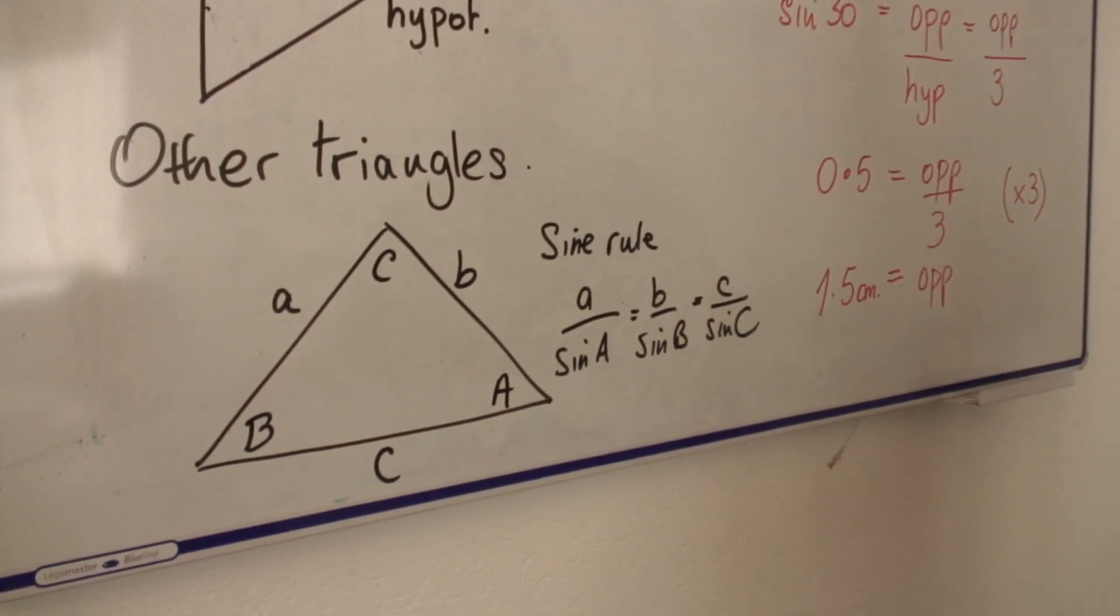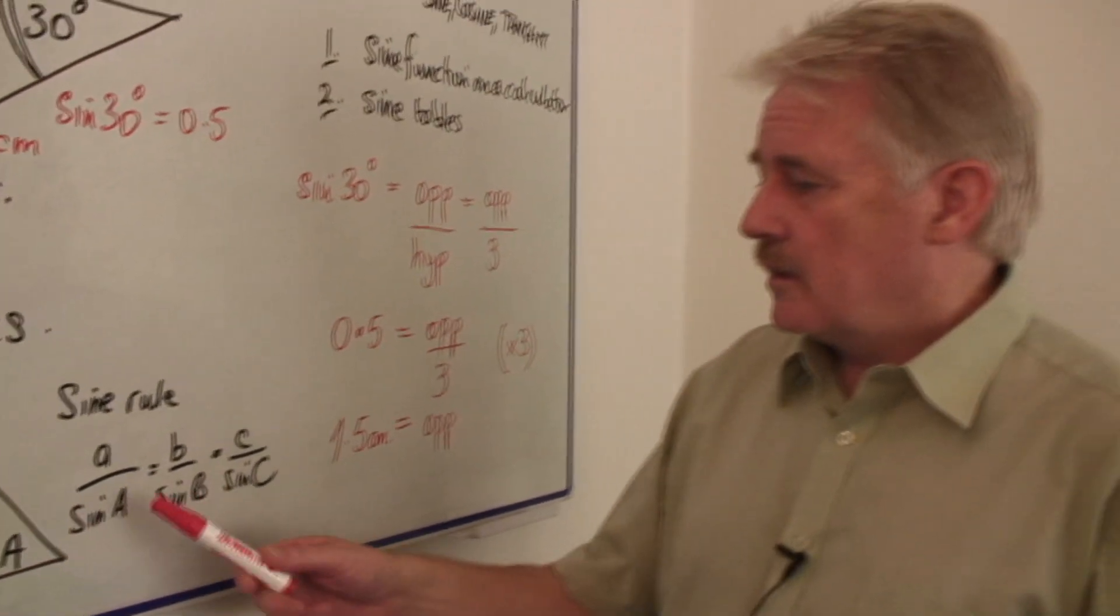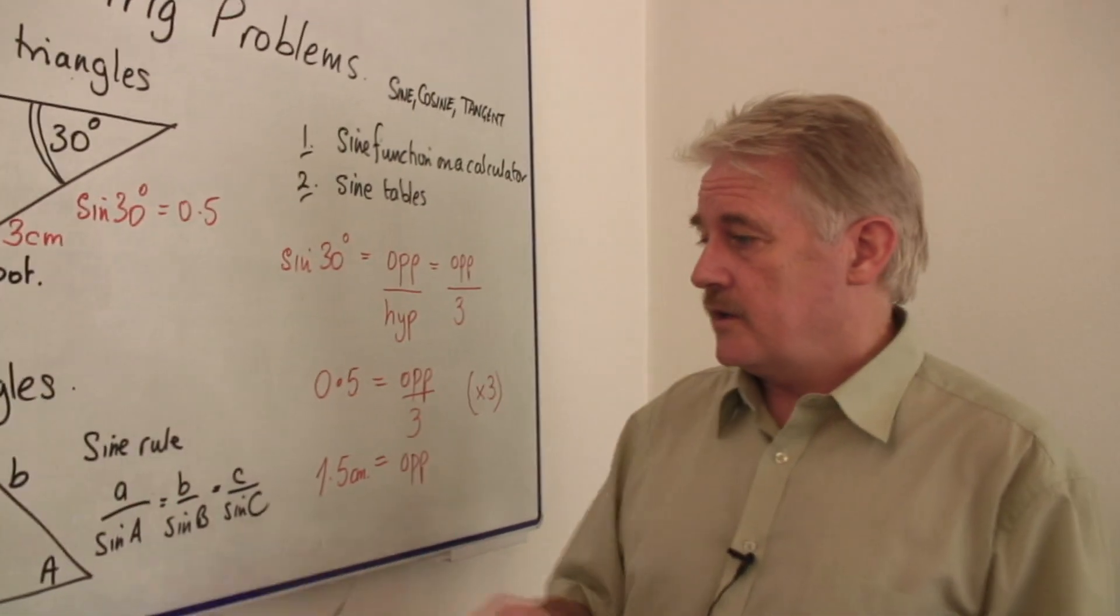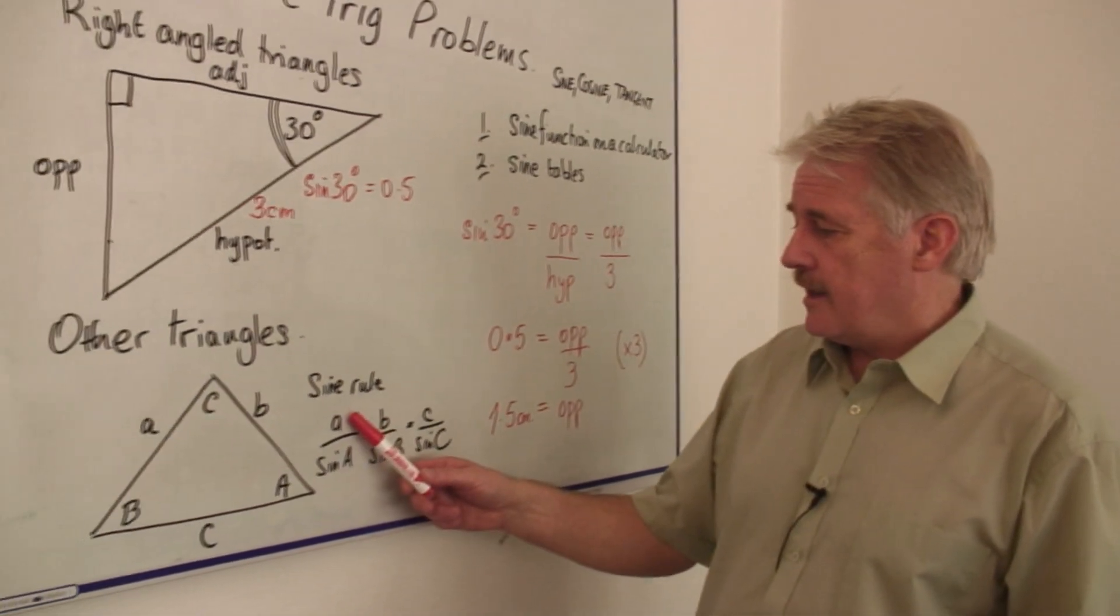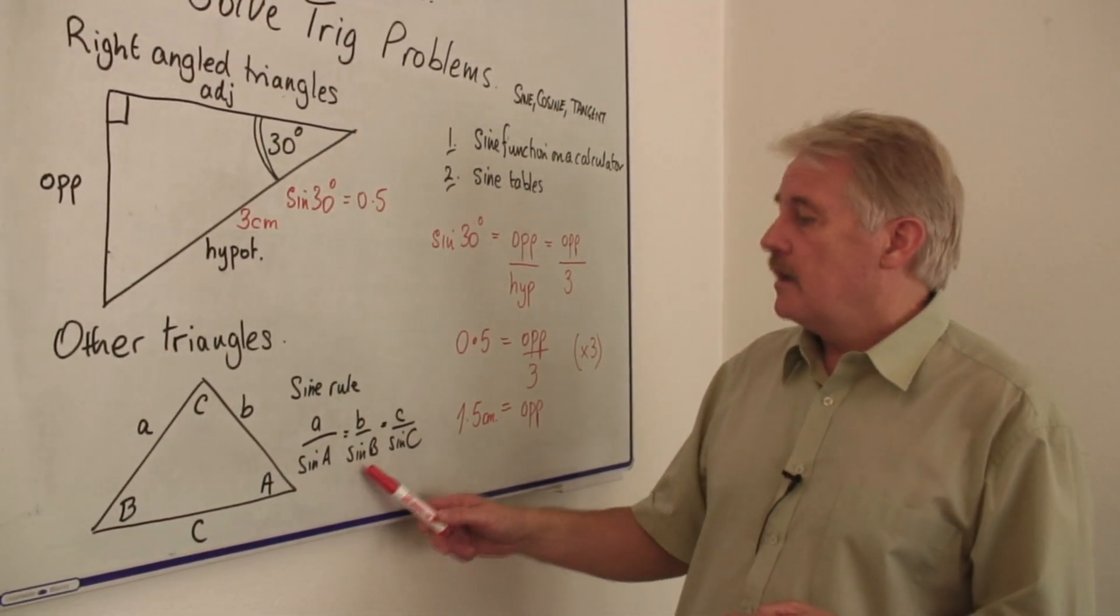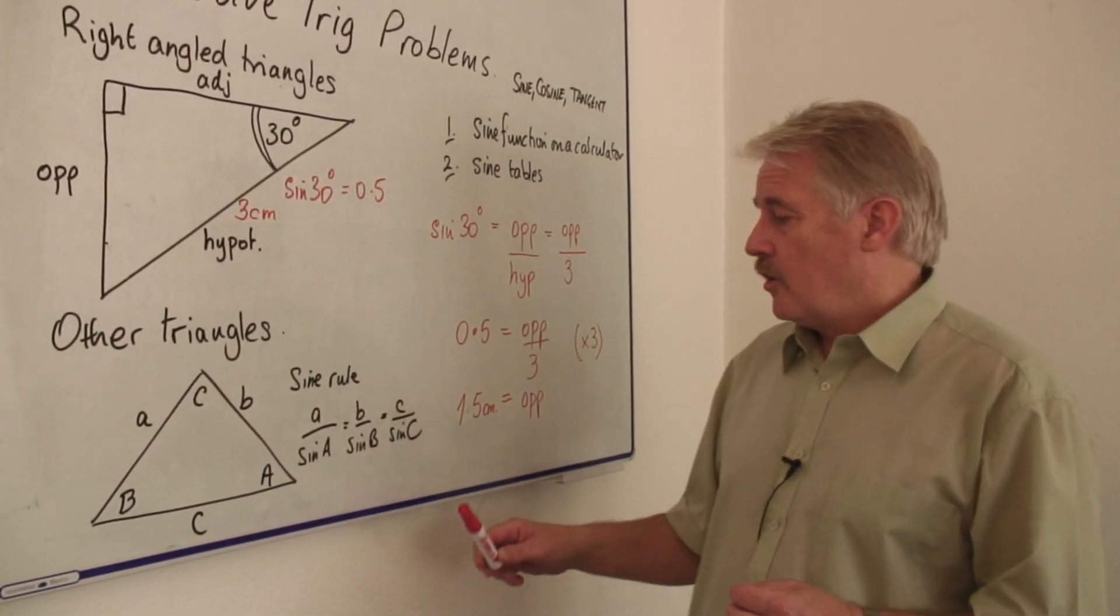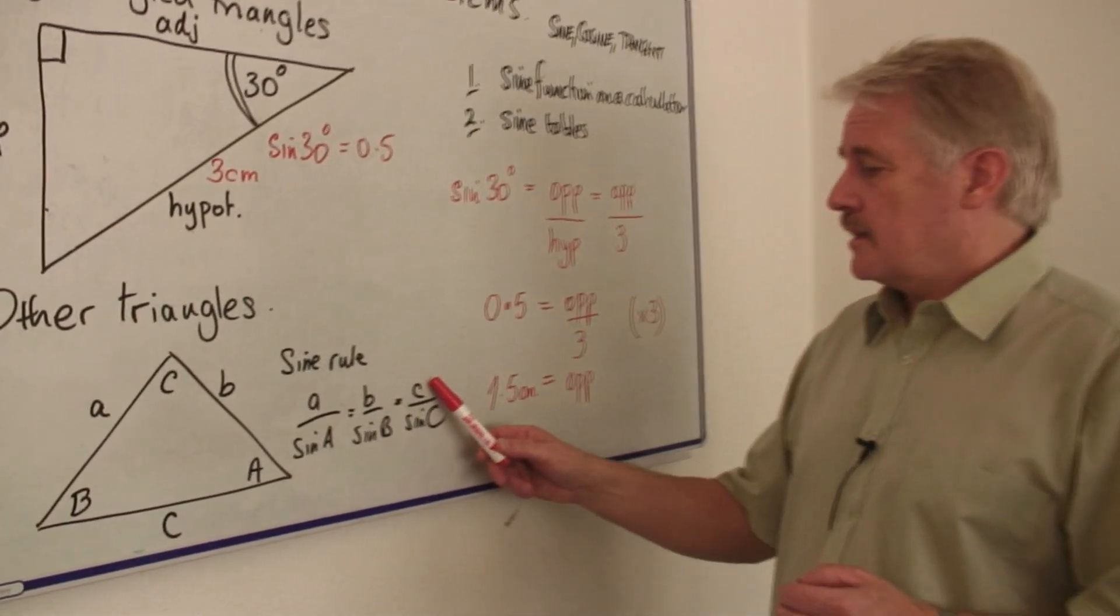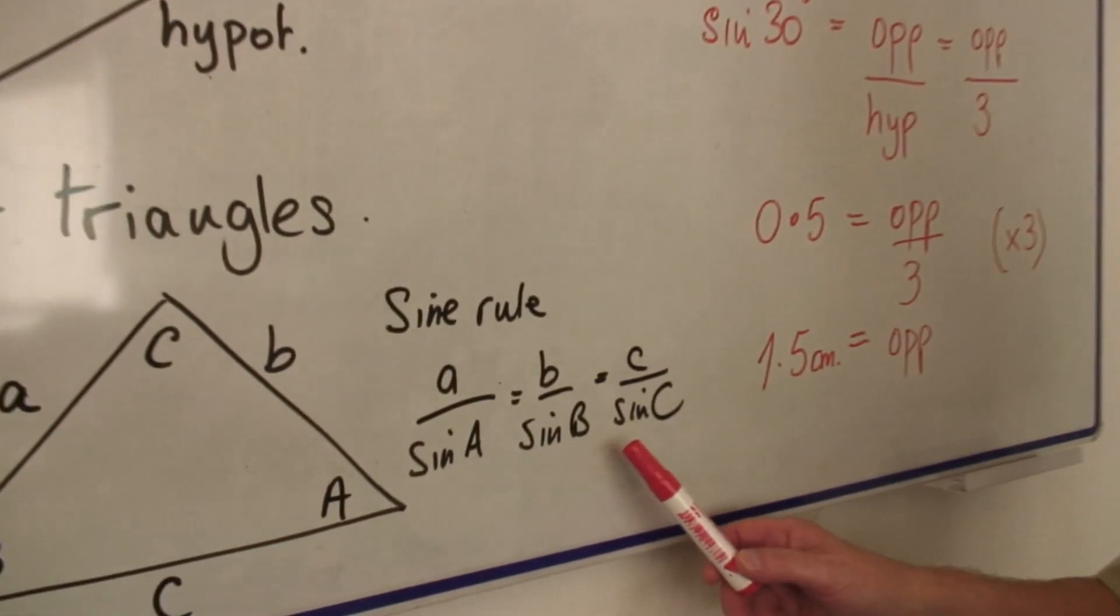What this means is that if we are given three of these variables, for example A, sine A, and sine B, then we can calculate B. Or if we're given B, C, and sine B, then we can calculate sine C.